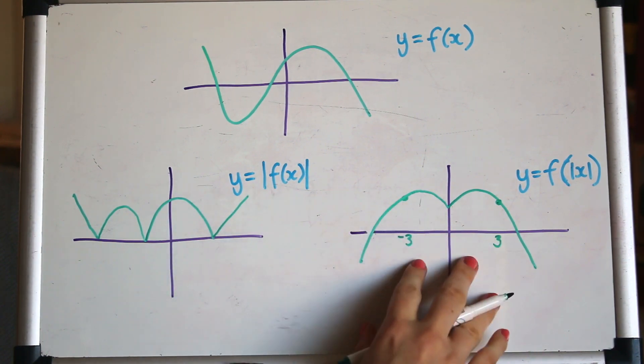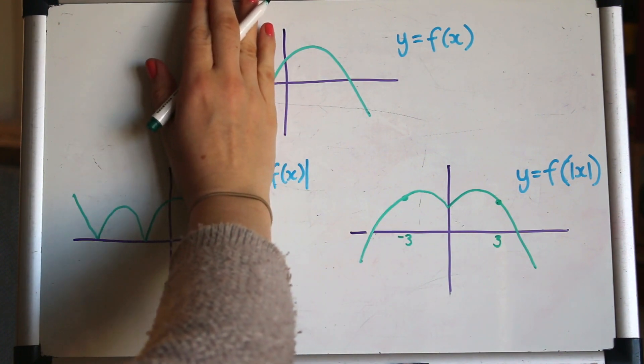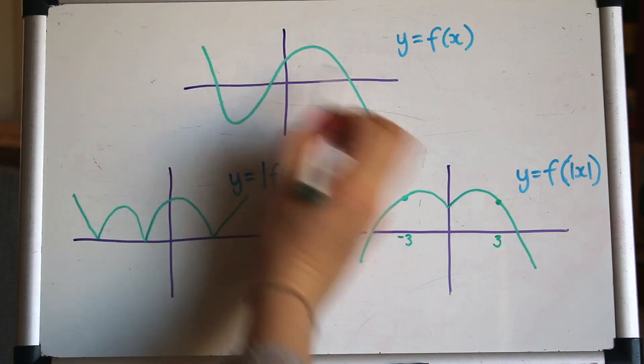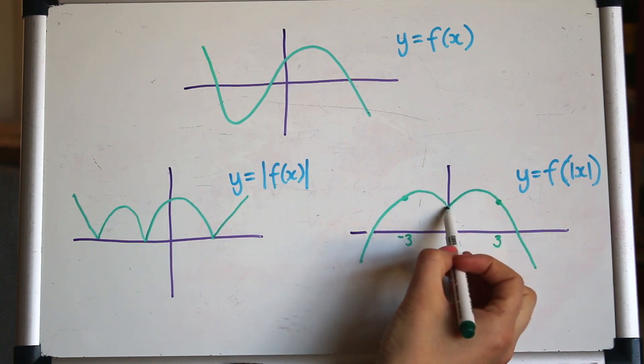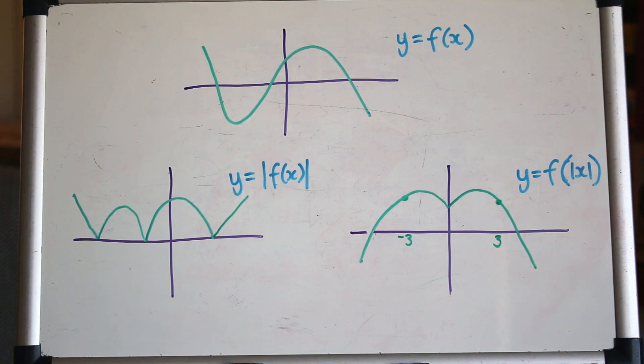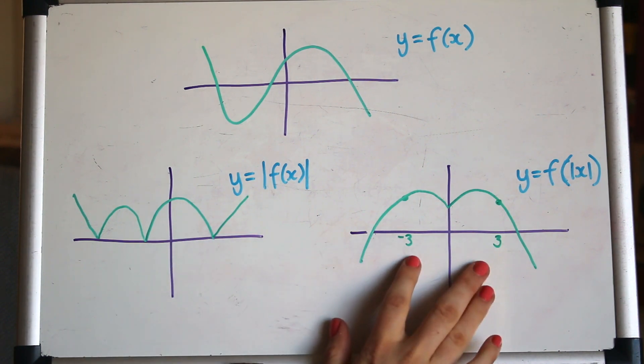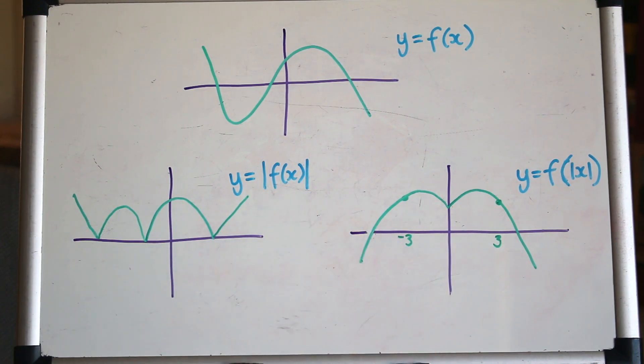So the way to draw this graph is to cut off everything on the left hand side of the y axis, and then reflect the stuff that's on the right hand side that way. Again, another very interesting graph. So I hope you followed the logic there of how to do those. Once you get your head around it, they're quite easy to draw, and quite fun as well I think.